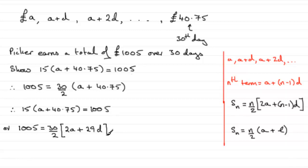And with that, this is the sneaky bit. What I'm going to do is we've got 30 over 2, which is 15, and then for the 2A, I'm going to split that as being A plus another A plus 29d.